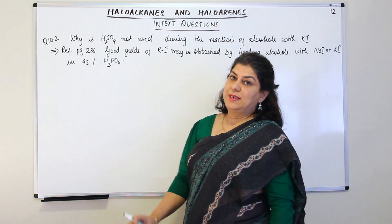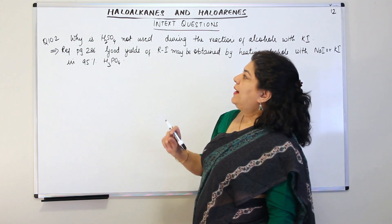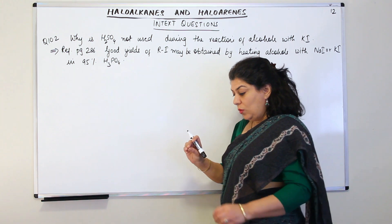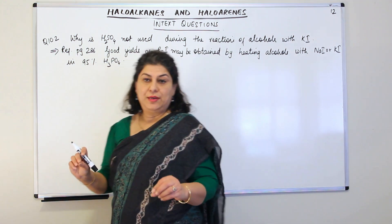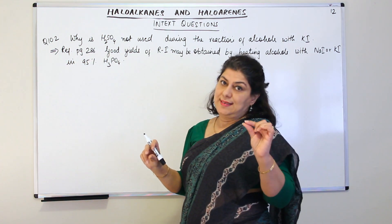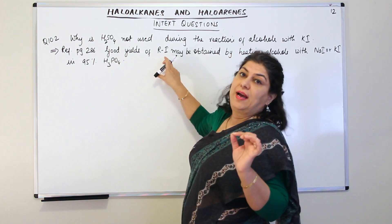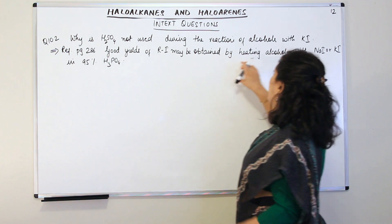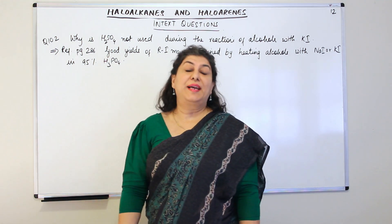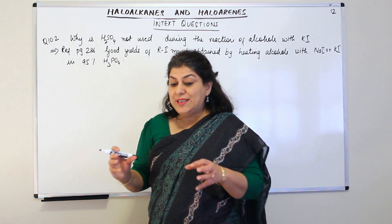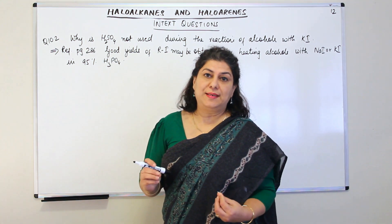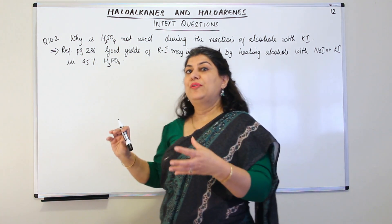This is question 10.2, your in-text question. The question is: why is sulfuric acid not used during the reaction of alcohols with potassium iodide? This refers to page 286, where it is written that good yields of alkyl iodides can be obtained by heating alcohols with sodium iodide or potassium iodide in 95% phosphoric acid. The question asks why sulfuric acid is not used in place of phosphoric acid — what is the difference between them?